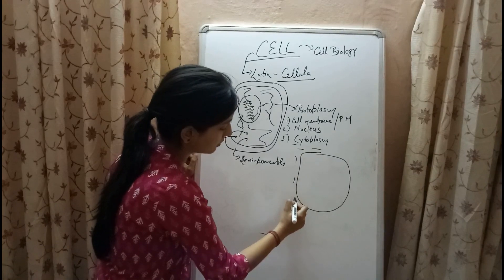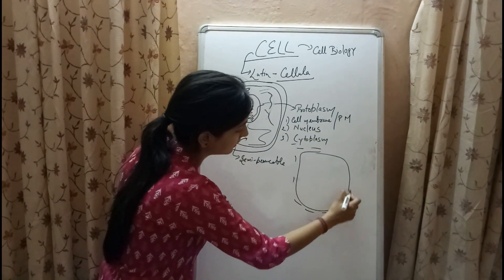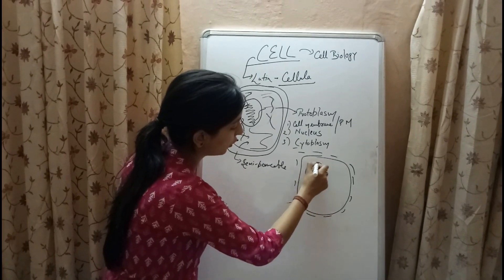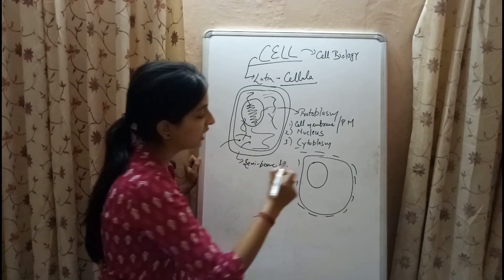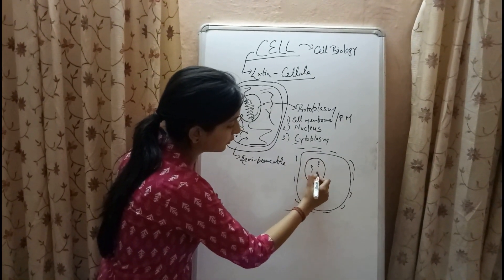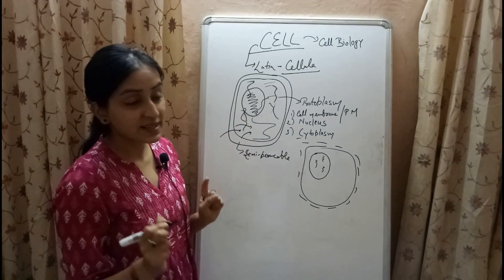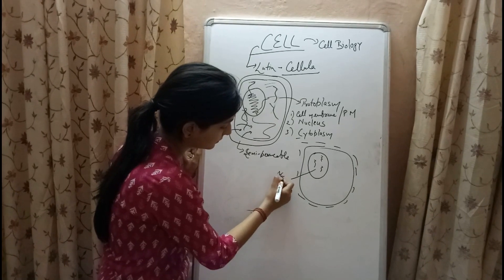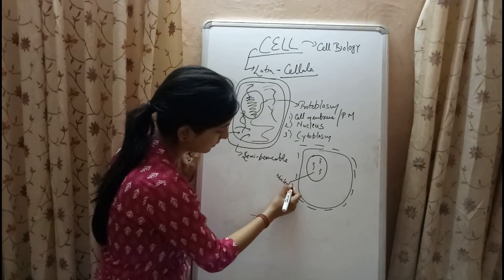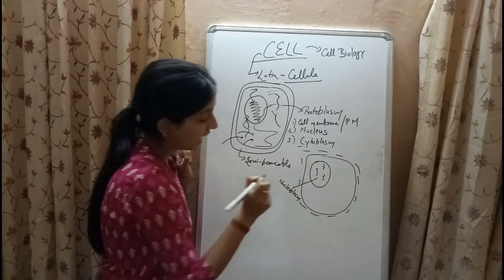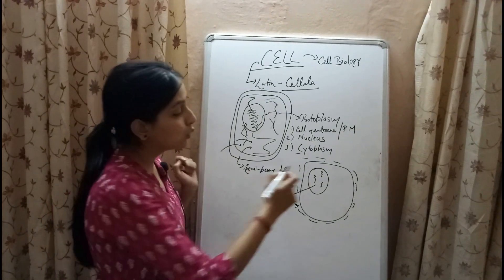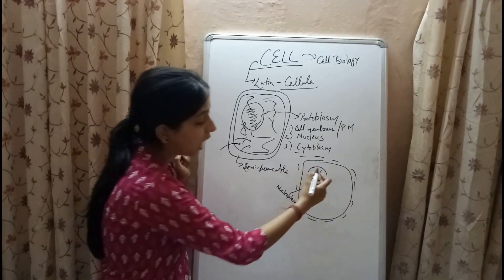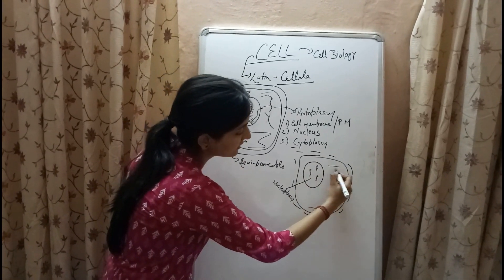This is the plasma membrane — the outermost covering of the cell. Inside the cell we have this oval or spherical structure called nucleus, which contains hereditary information. The sap present inside the nucleus is called nucleoplasm. The protoplasmic content within the plasma membrane but outside the nucleus is called cytoplasm.